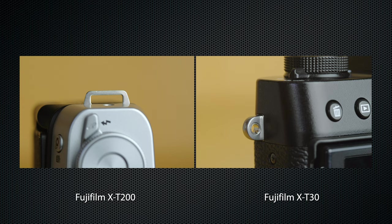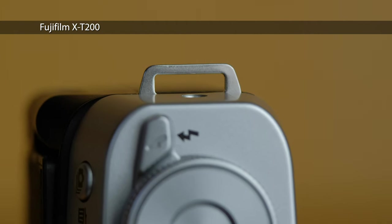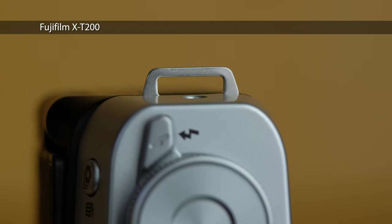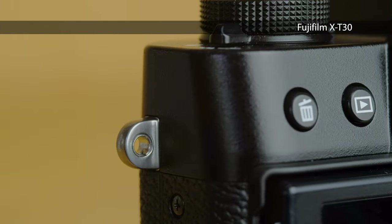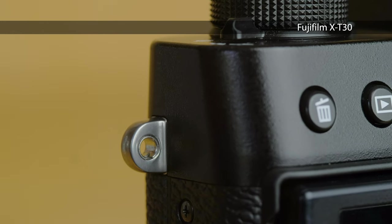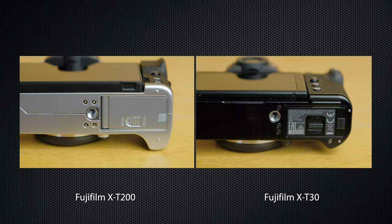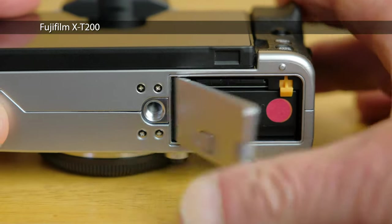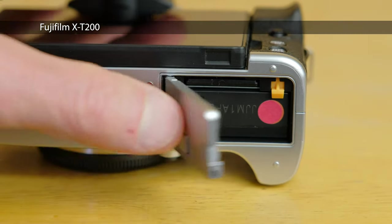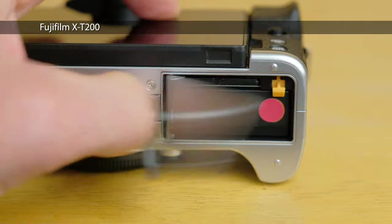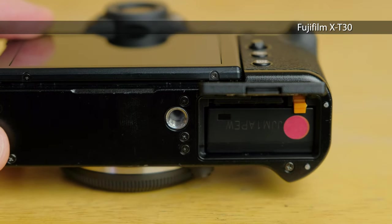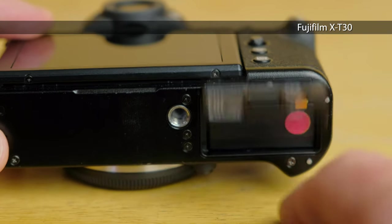Both include straps, though the eyelets are different. The X-T200's are a little more standard, while the eyelets on the X-T30 require clips and protective strips to attach a strap — both are included. Battery doors are on the bottom, combined with the SD card slot. I find the X-T200 slightly easier to use. Both spring open; neither snaps closed. Both are too close to the non-centered tripod socket.